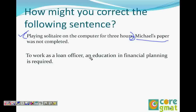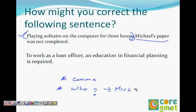You can ask yourself: playing solitaire on the computer — who? The answer implied is Michael's paper, which is illogical. The actual subject should be Michael. So the correct sentence would be: playing solitaire on the computer for three hours, Michael could not complete his paper. Or: Michael did not complete his paper.